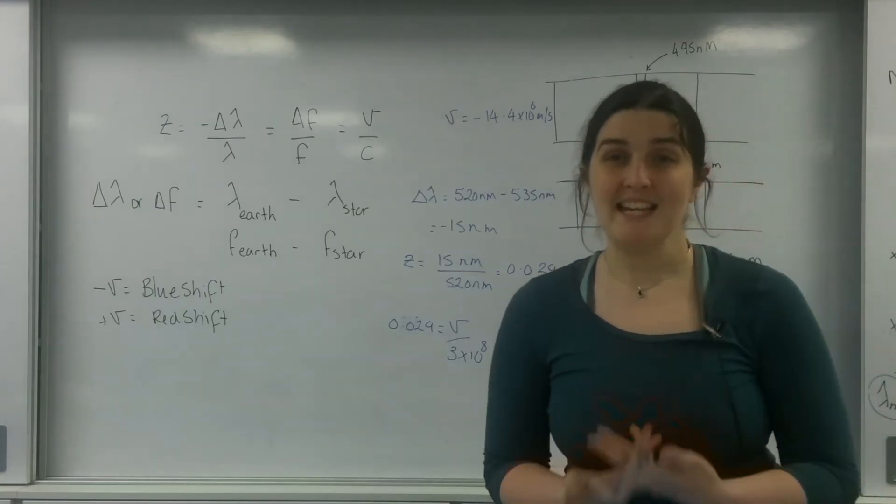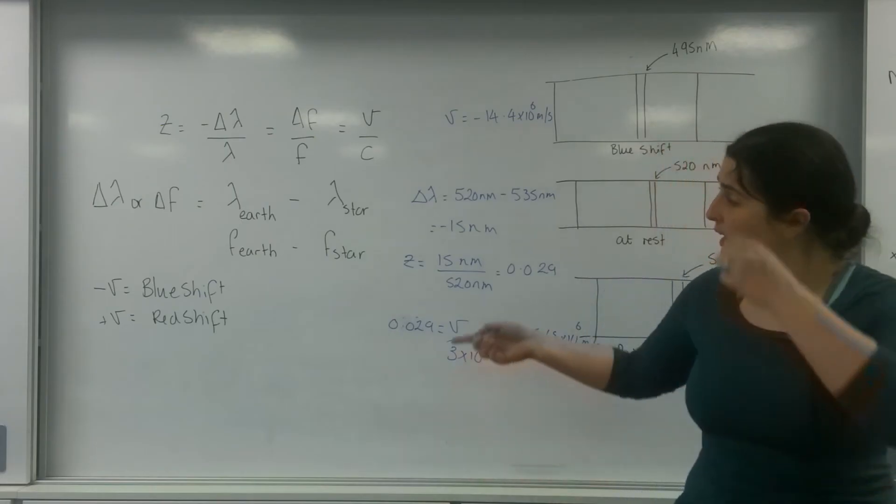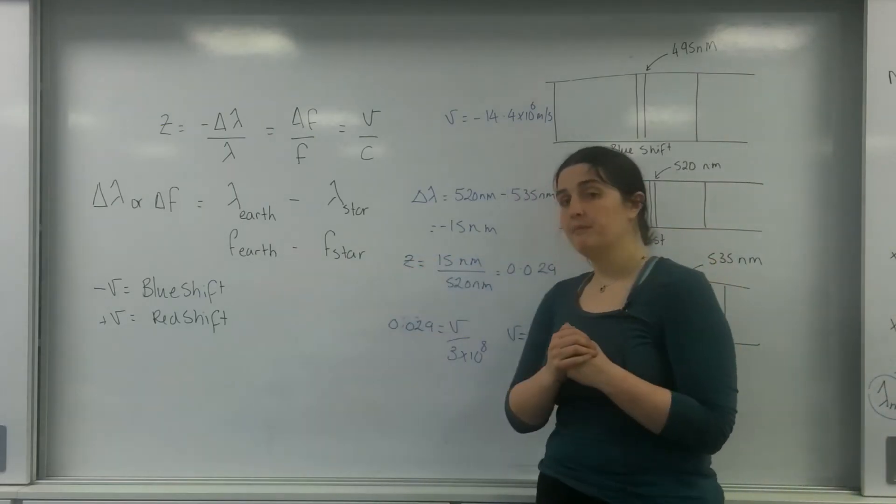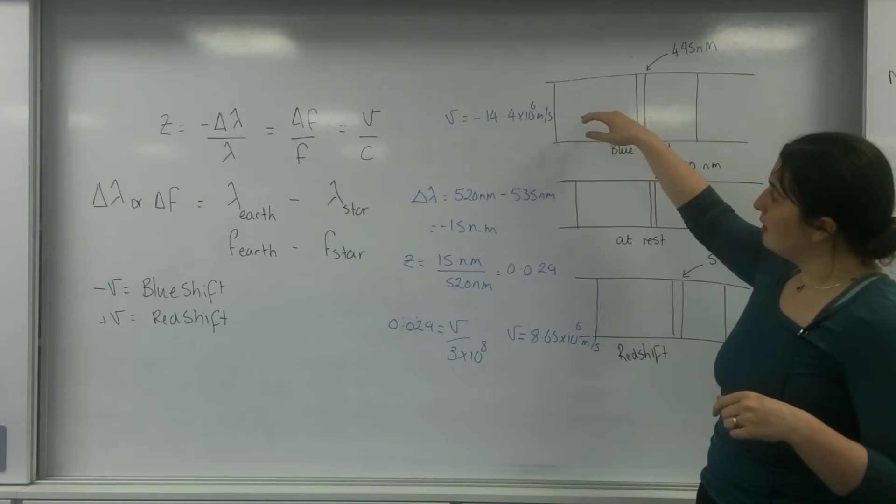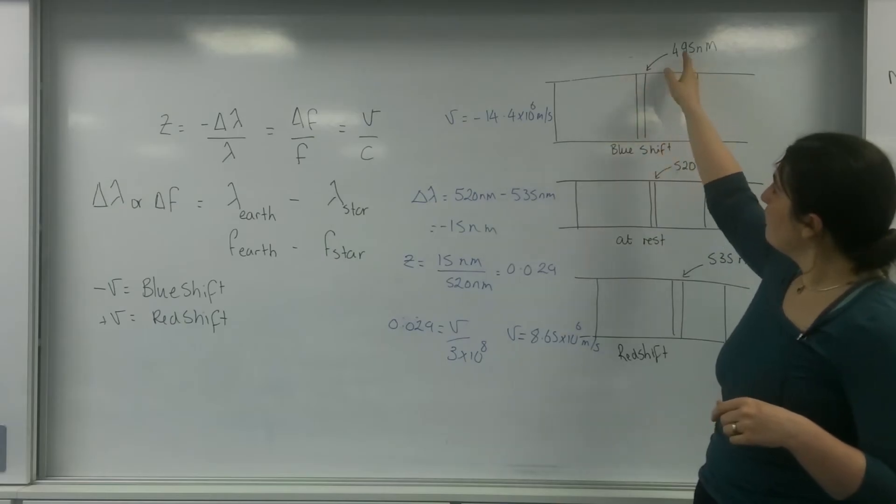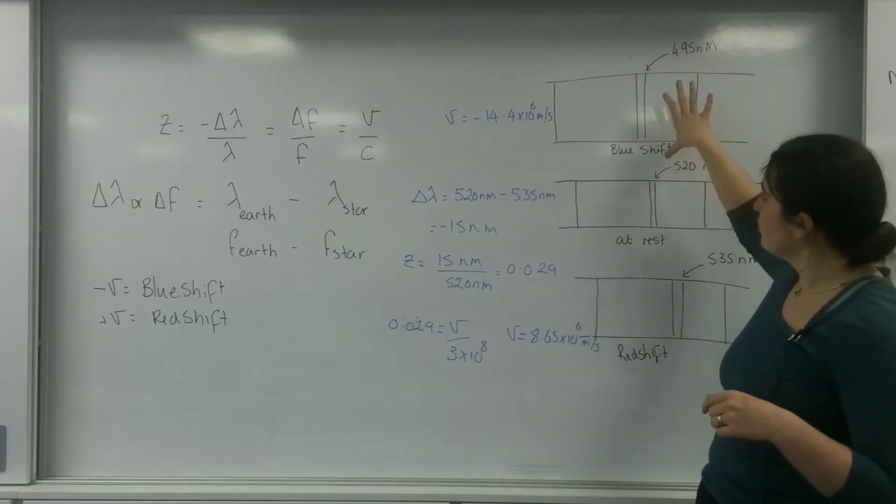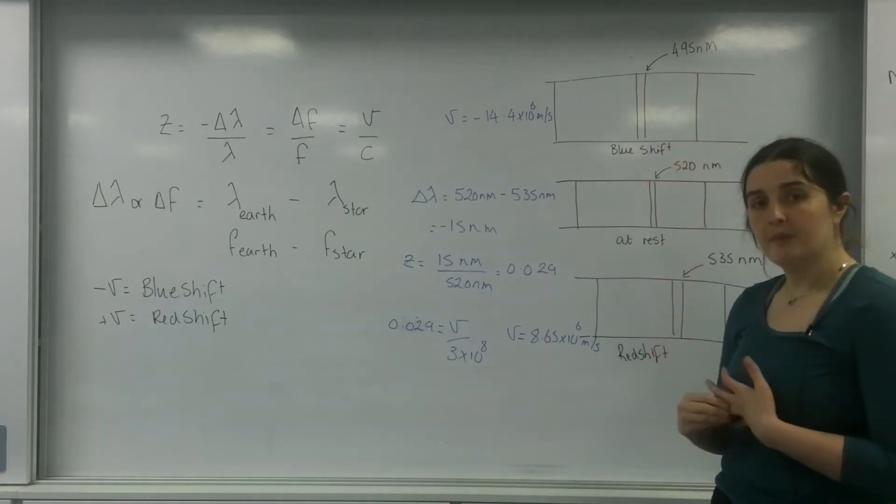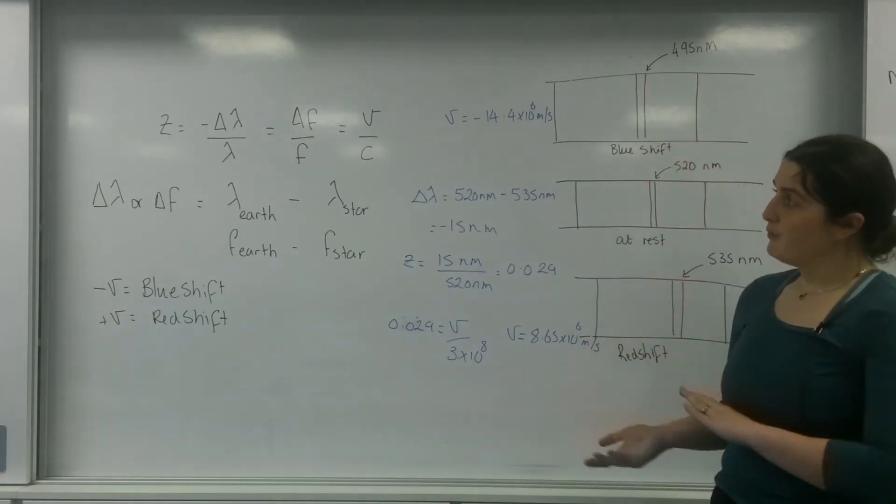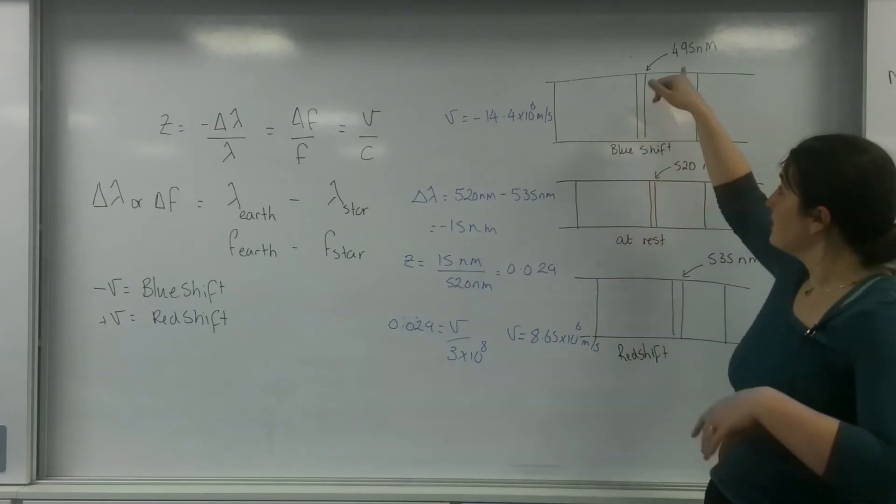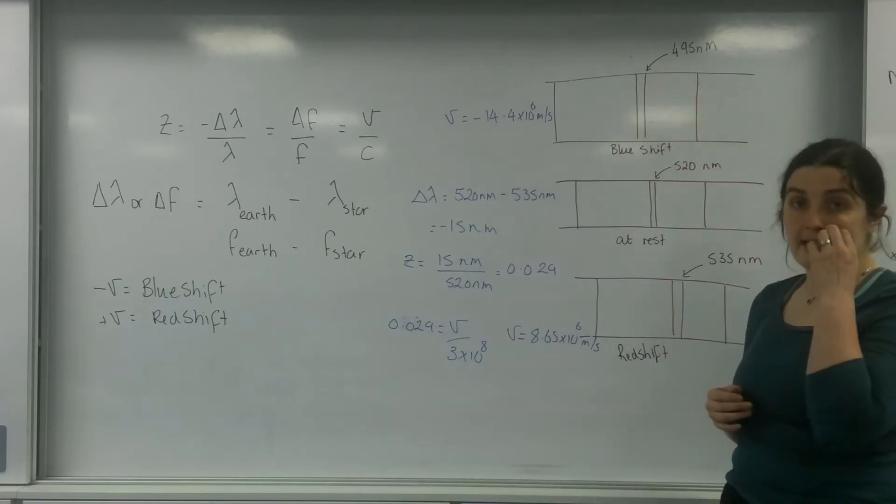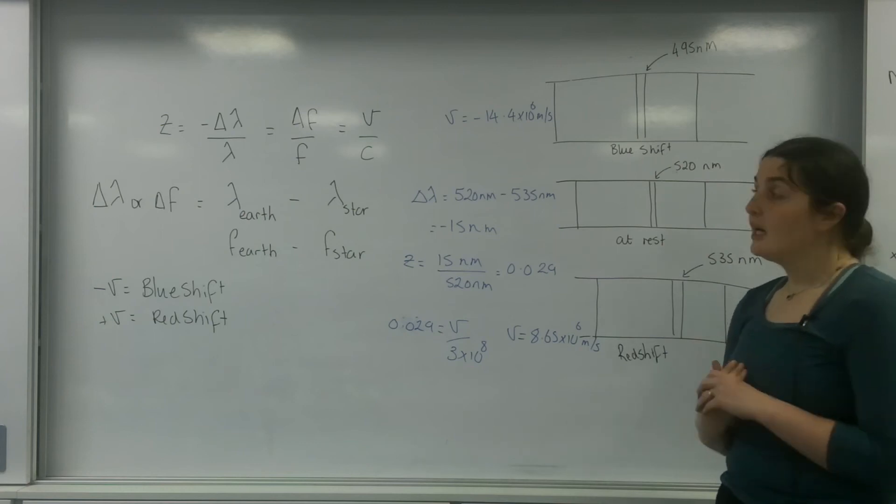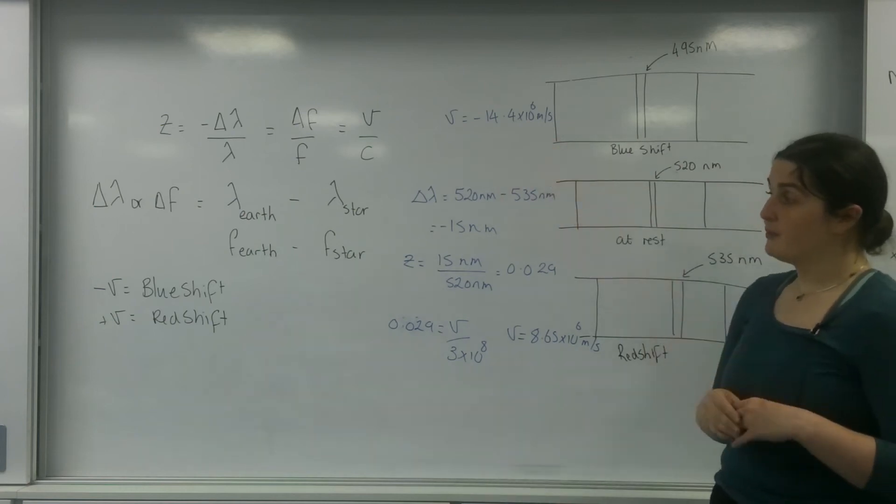Your velocity should be negative if it is blue shifting. And therefore the actual change in your wavelength should be getting smaller. If you're using frequency, you are more than welcome to convert this into frequency using C equals F lambda to actually work out the frequencies.